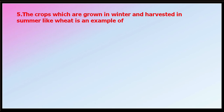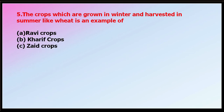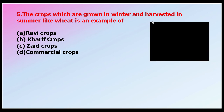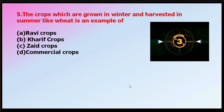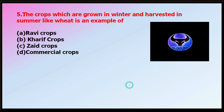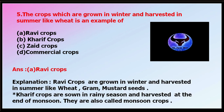Question number five: crops which are grown in winter and harvested in summer, like wheat, are an example of which type? Options: Rabi crops, Kharif crops, Zaid crops, or commercial crops. The correct answer is Rabi crops — grown in winter and harvested in summer. Examples include wheat, gram, and mustard seeds. Kharif crops are sown in the rainy season and harvested during the monsoon, so they are also called monsoon crops.